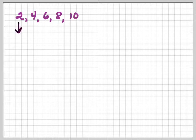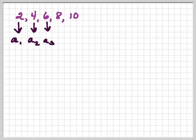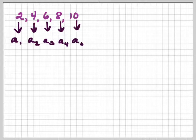2, 4, 6, 8, 10. 2 is the first term, 4 is the second term of the sequence, 6 is the third term, 8 is the fourth term, and 10 is the fifth term.